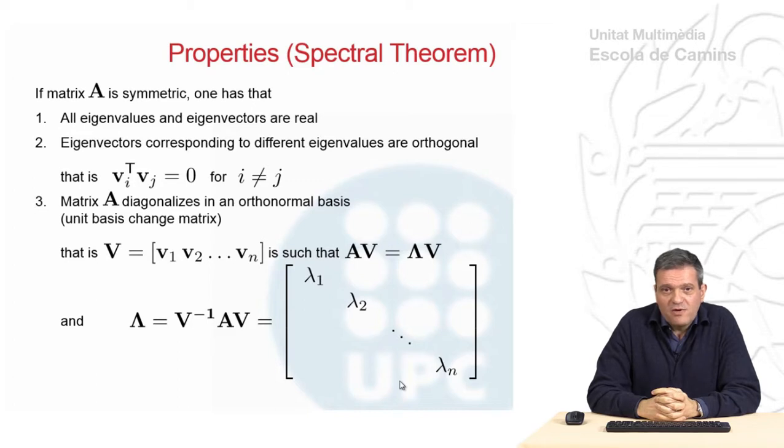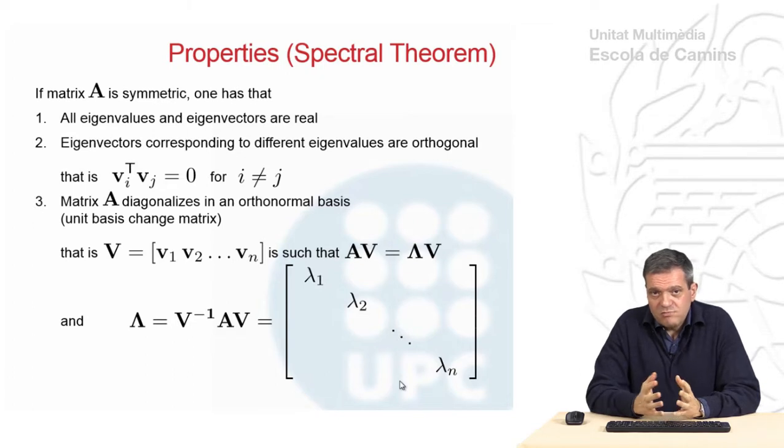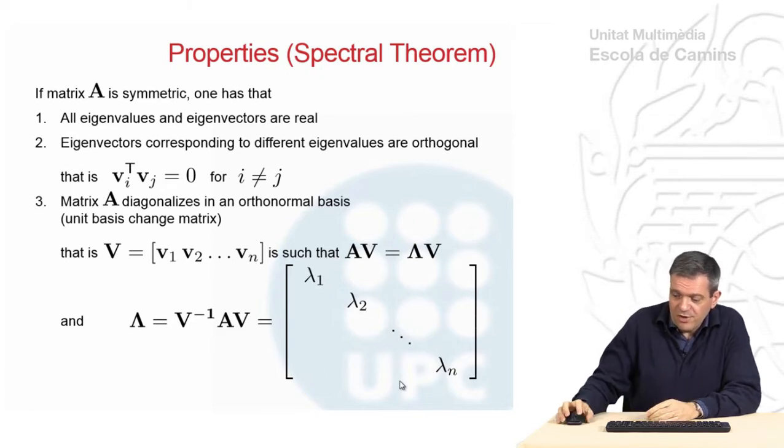If matrix A, the input matrix A is symmetric, which is often the case in engineering, the eigenvectors are orthogonal. So you have an orthogonal basis in which your matrix diagonalizes. This is a consequence of solving the eigenvalue problem.